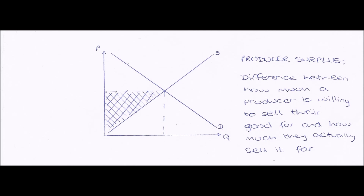Next, on to producer surplus. Producer surplus is defined as being the difference between how much a producer is willing to sell their good at and how much they actually sell it for. We're talking about businesses and companies selling their goods — say for example a business was willing to sell their good for a minimum of 100 pounds.